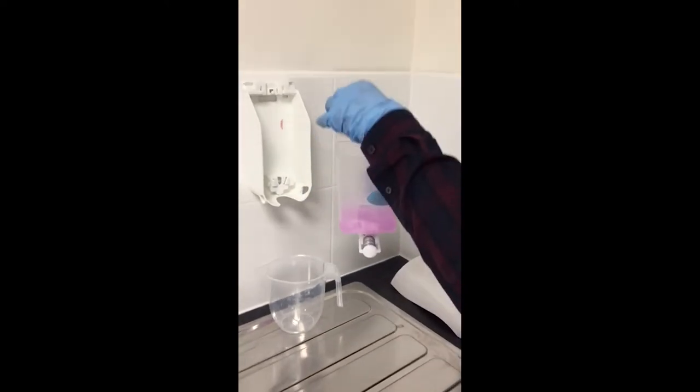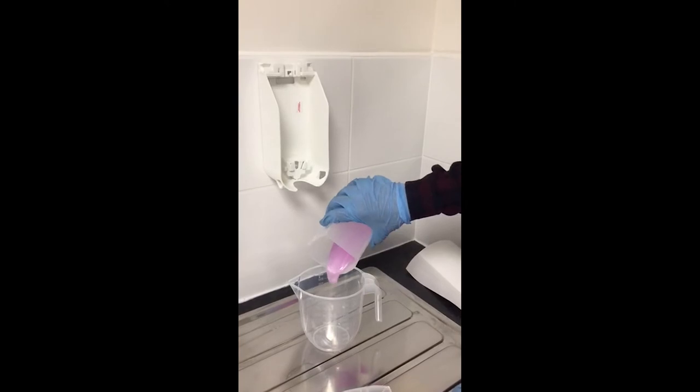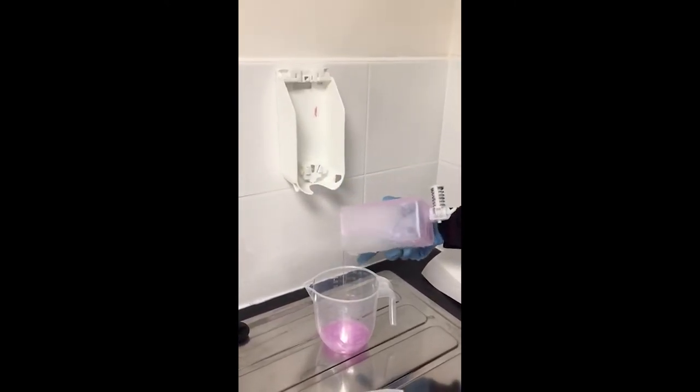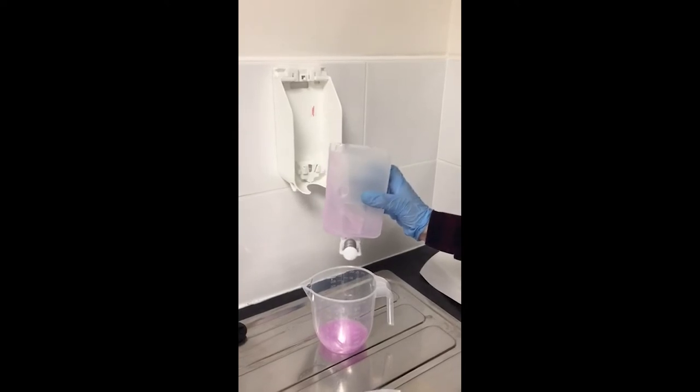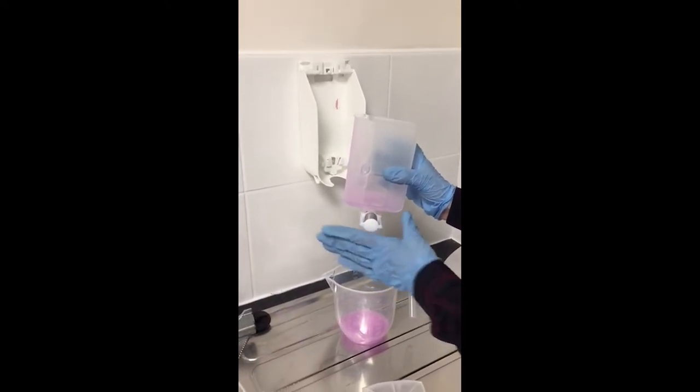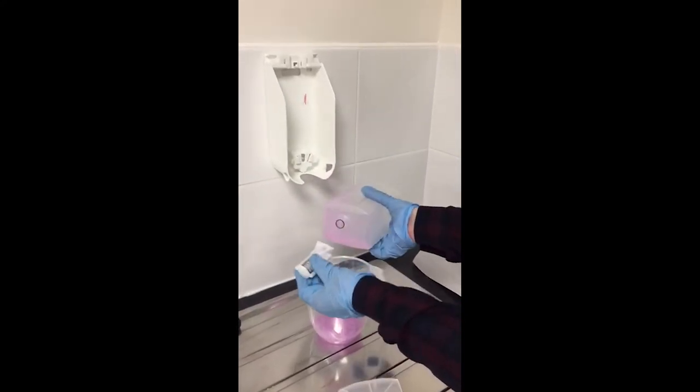Now I'm going to take off the lid and remove the soap from the unit like so. Once that's done, over the jug, you're going to remove the pump. To do this, you need to twist it towards the left by 90 degrees and remove it like that.